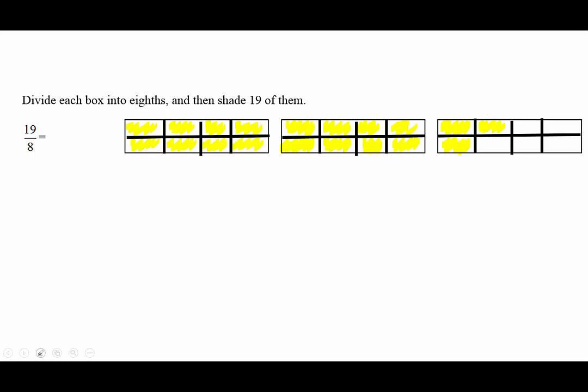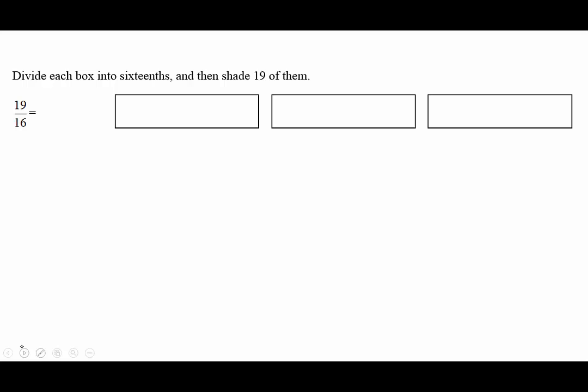Now let's write this as a mixed number. I was able to shade 2 complete boxes and 3/8 of this box. This shows us that the improper fraction 19/8 is equivalent to the mixed number 2 and 3/8. Now we have 19/16 and we want to write that as a mixed number.